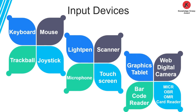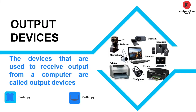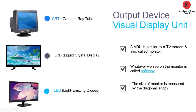So far we have discussed all input devices: keyboard, mouse, trackball, joystick, light pen, scanner, microphone, touch screen, graphic tablet, barcode reader, web camera, digital camera, MICR, OCR, OMR, and card reader. Now we are going to learn about output devices. The device that is used to receive output from a computer is called an output device. There are two kinds of output: hard copy and soft copy. Hard copy is output you can see and touch, while soft copy is output you can see but cannot touch. Output devices include printer, headphone, monitor, and speaker.